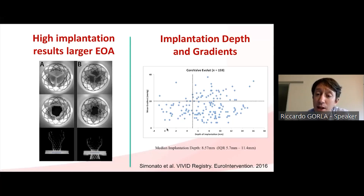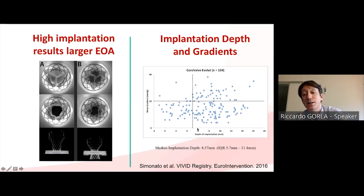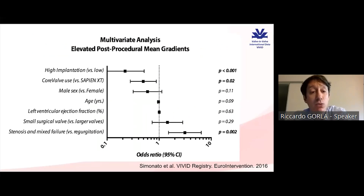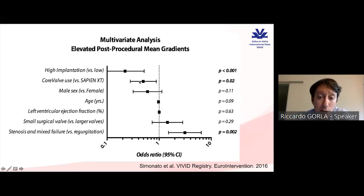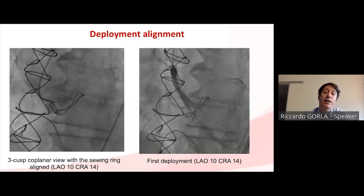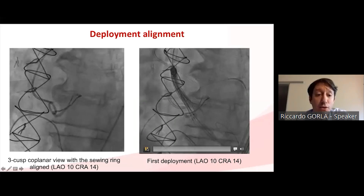In a study published on EuroIntervention involving Evolute valve-in-valve patients, an implantation depth of no more than five millimeters was associated with low post-procedural gradient, whereas implantations deeper than five to six millimeters into the left ventricle were not. On multivariate analysis, high implantation and the use of a supranular device were both associated with favorable post-operative gradients compared to balloon-expandable devices.